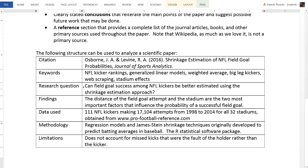There's a research question somewhere in the paper that needs to be clearly stated, and your job is to find it. The research question for the example paper I'll be providing is: can field goal success among NFL kickers be better estimated using a particular statistical method called the shrinkage estimation approach?